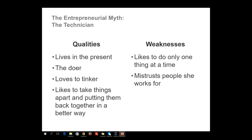The technician, for example, has qualities like a person who lives in the present, who likes to do, loves to tinker, and likes to take things apart and put them back together in a better way. The weaknesses of this technician might be that they only like to do one thing at a time or they mistrust people that they work for.